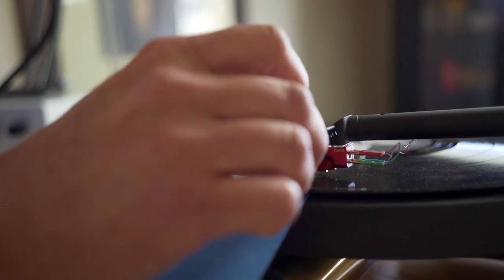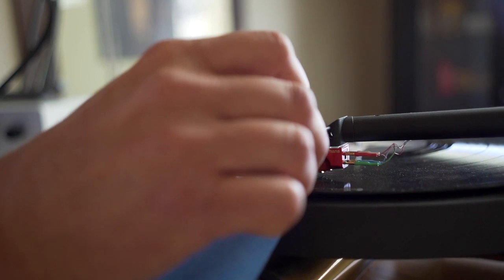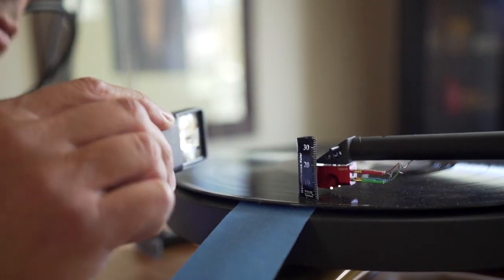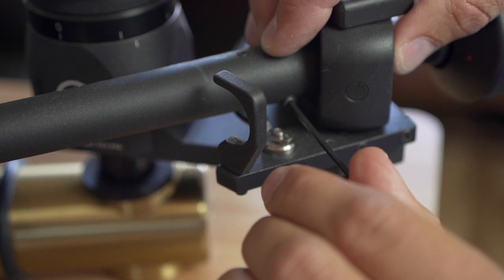The next step is to install the appropriate number of shims on the dual axis WALL-E reference to equal your cartridge height and perfectly level the underside of the head shell with the record. Alright, so let's level this out.